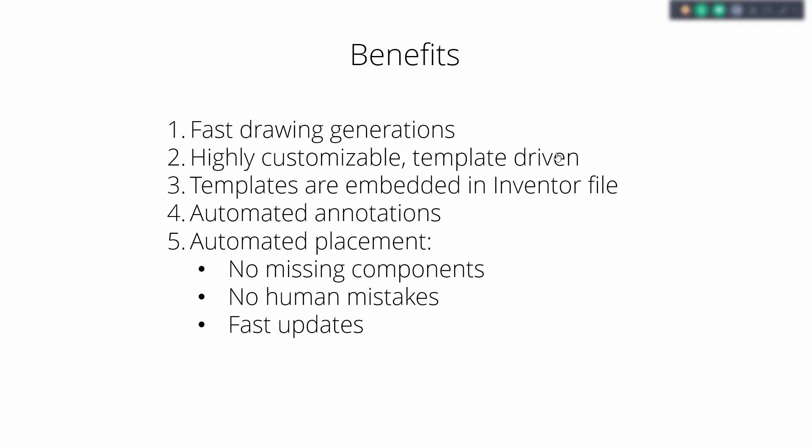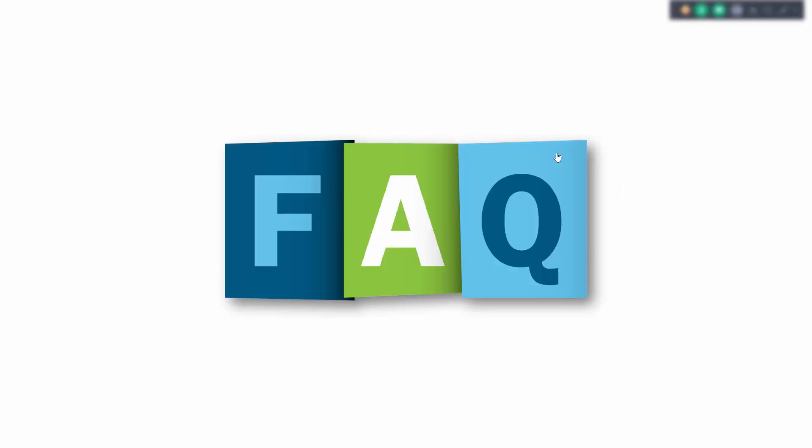Because all this information is placed automatically, there is no place for human mistakes, no more missing components, and you get very fast updates. Even if you notice something wrong with the model only after the drawing is generated, you can go back, make the changes in your concept, update those changes in the drawing, and get a suitable result for the next steps in the production line.